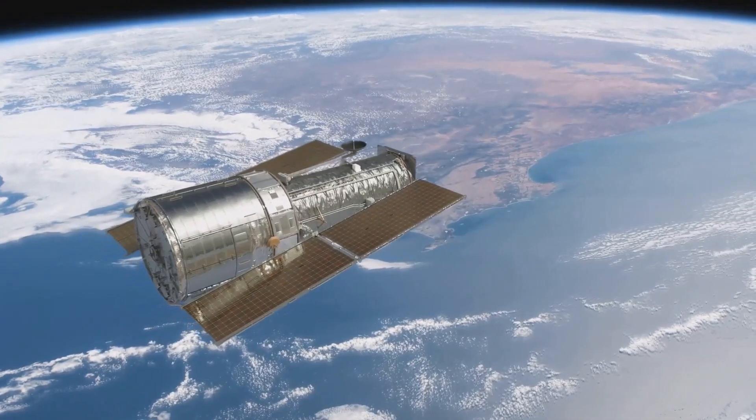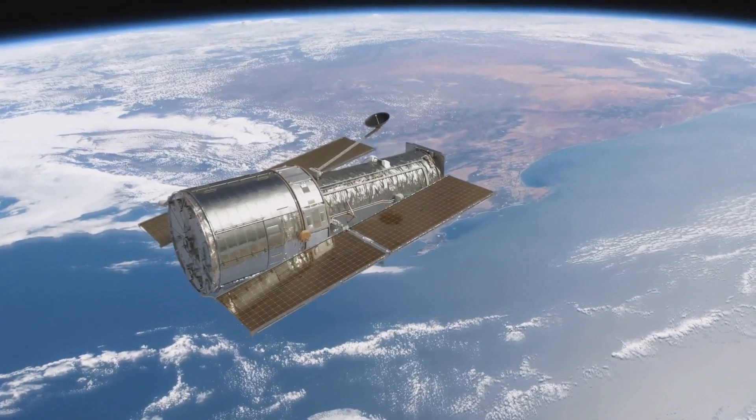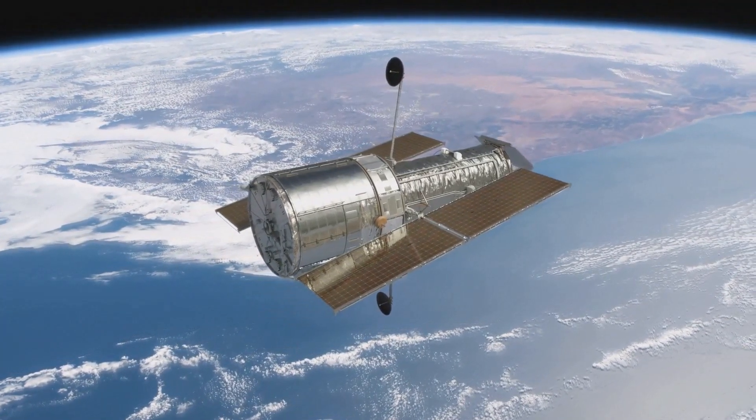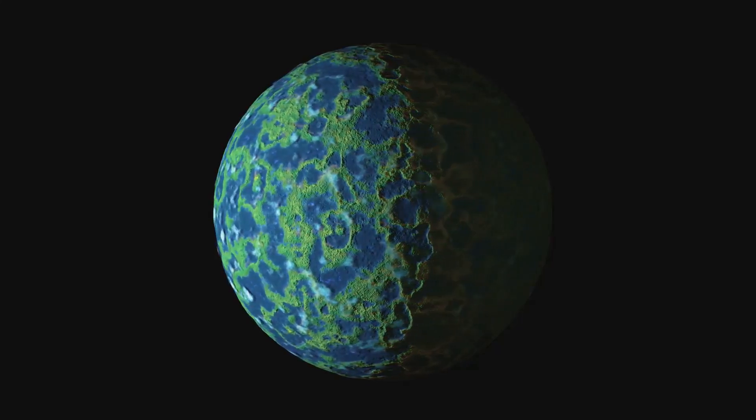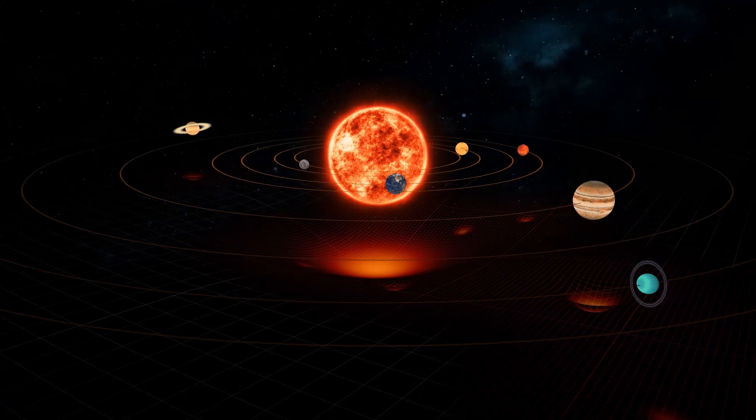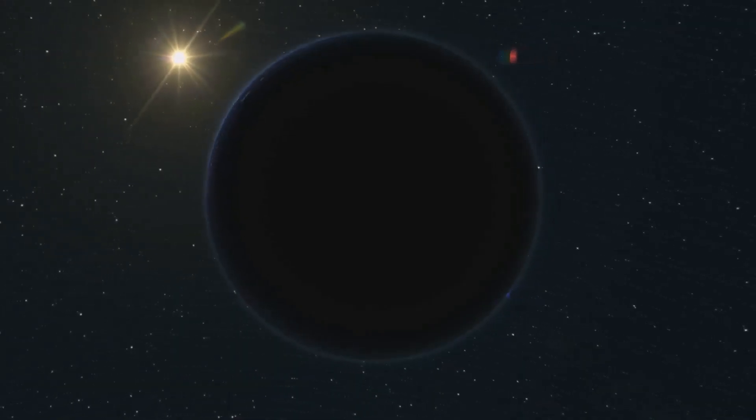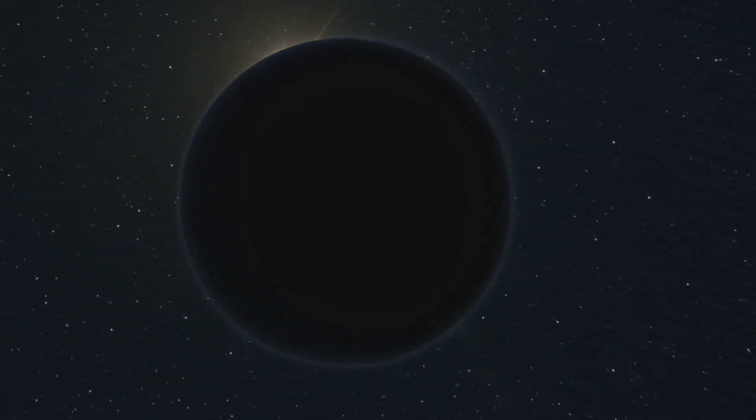As we continue to scan the cosmos for Planet Nine, one chilling question remains: what if this massive, hidden planet ever came close to Earth? With a mass ten times greater than our own, and gravitational force strong enough to reshape the Kuiper Belt, Planet Nine wouldn't need to collide with us to cause chaos.